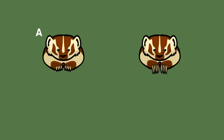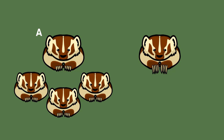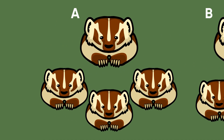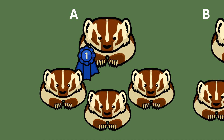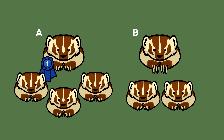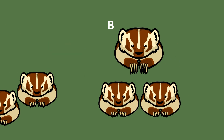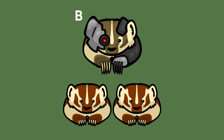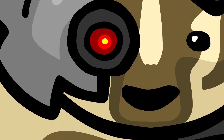If badger mother A raises three pups to maturity, while badger mother B only raises two, badger A is the evolutionary winner — at least by a little bit in this round of the struggle for existence. This is true even if she then promptly dies while badger B is somehow granted immortality, provided, of course, that she's no longer able to reproduce.